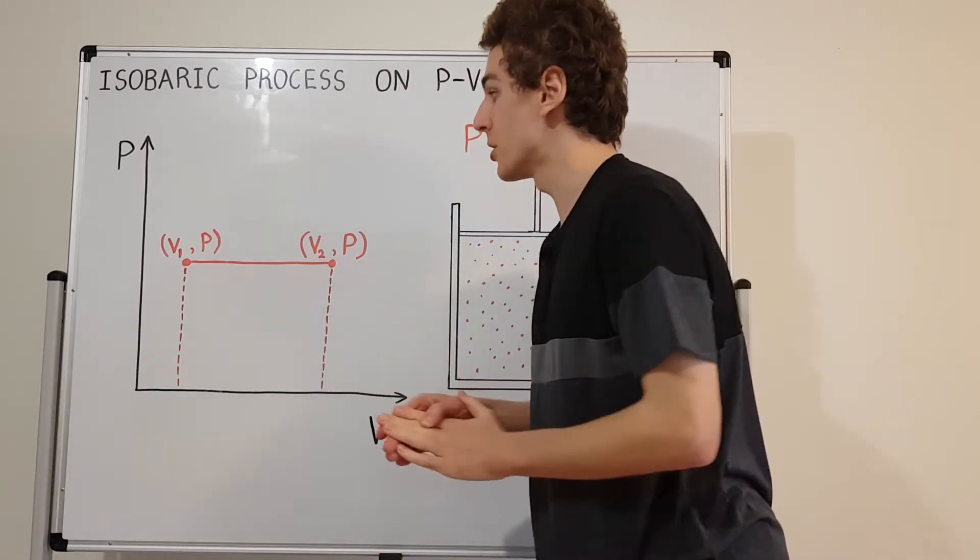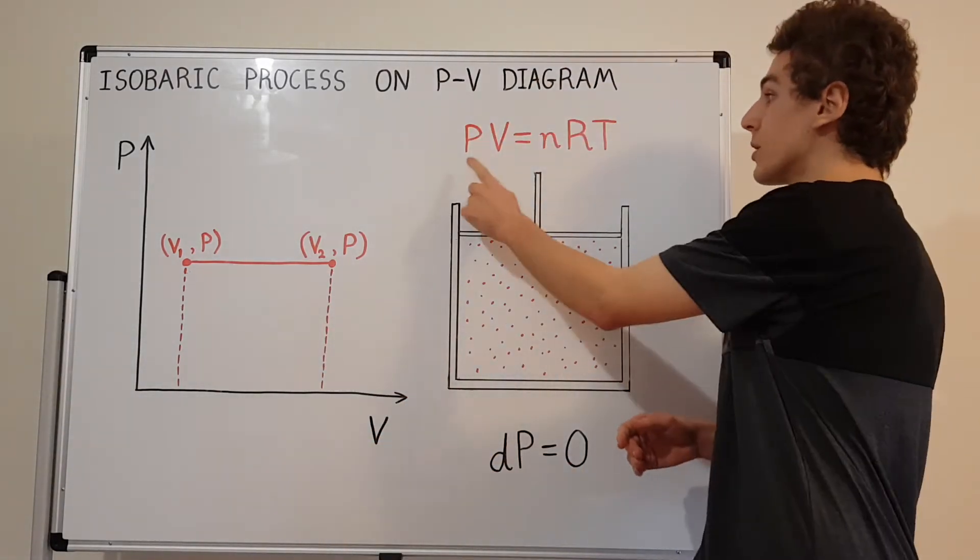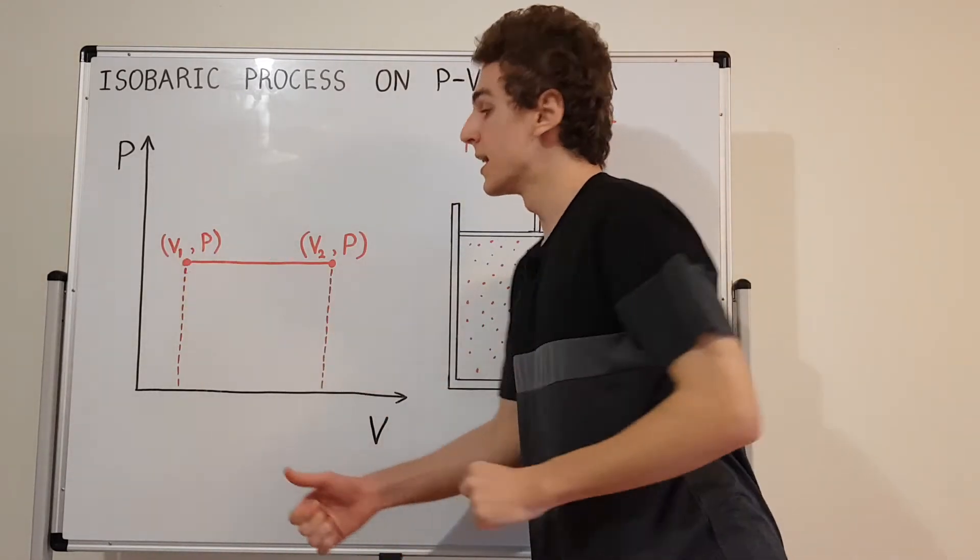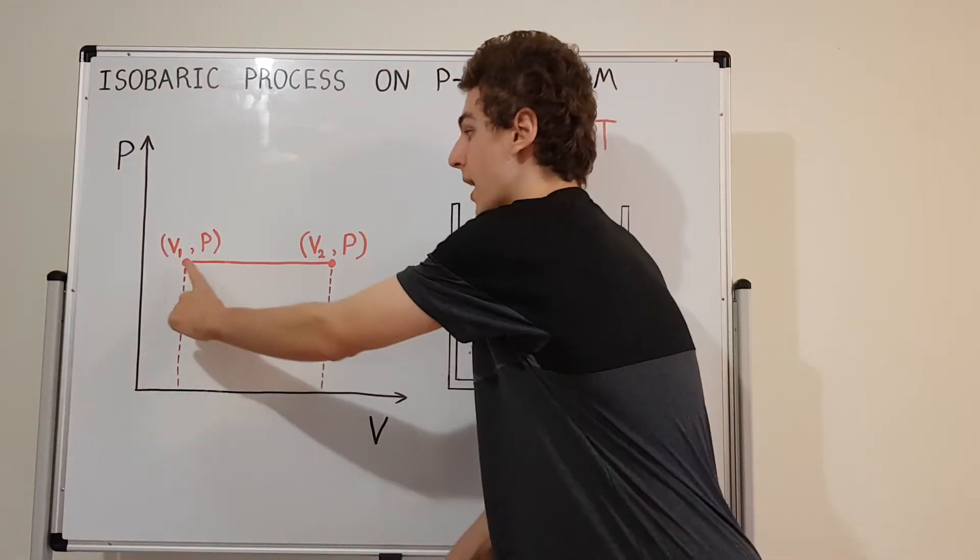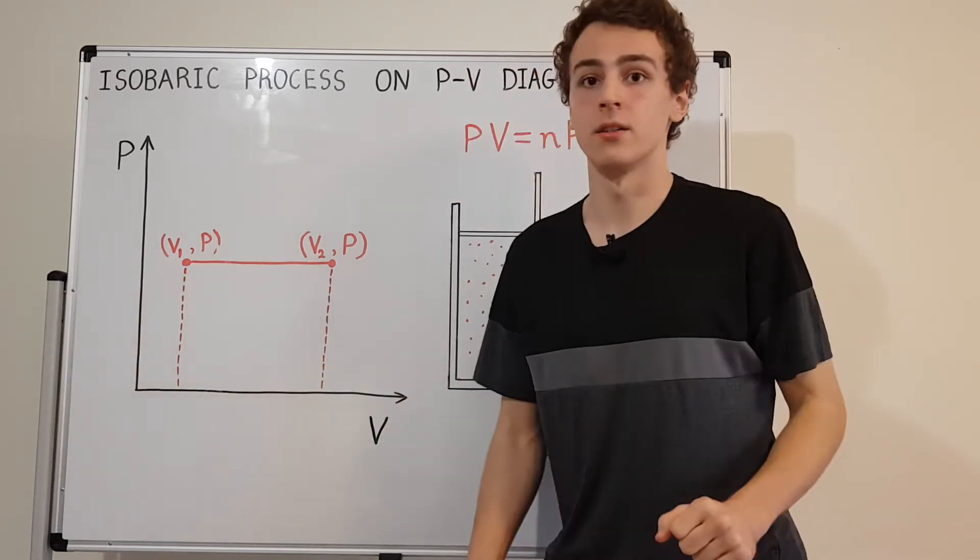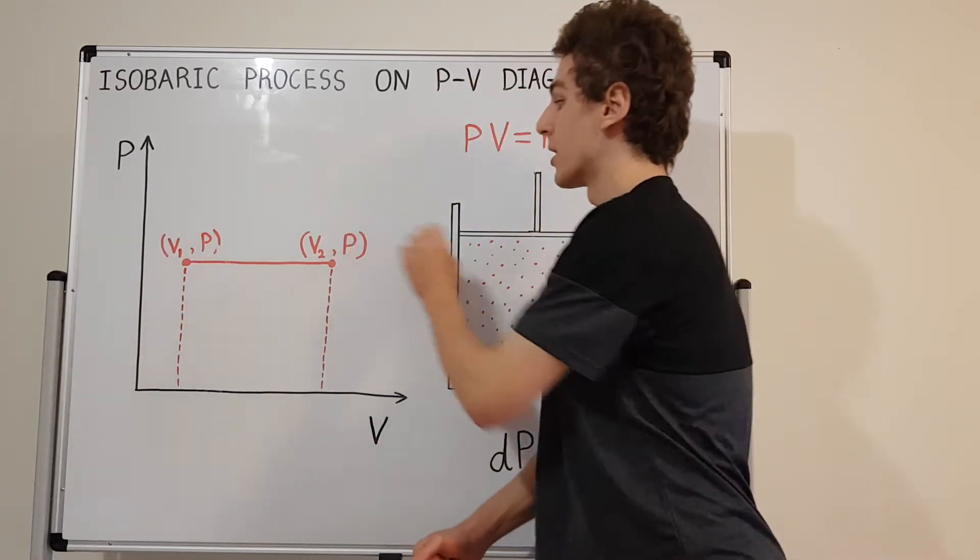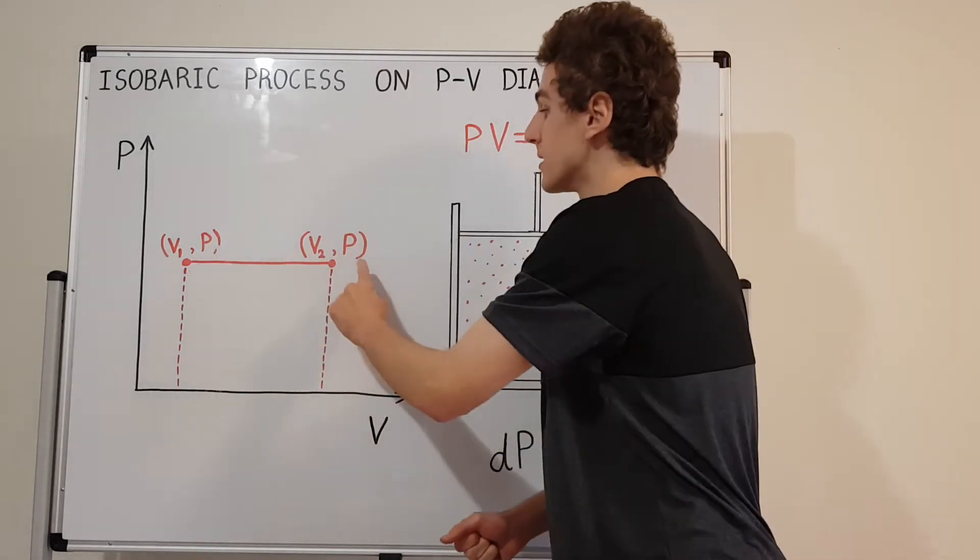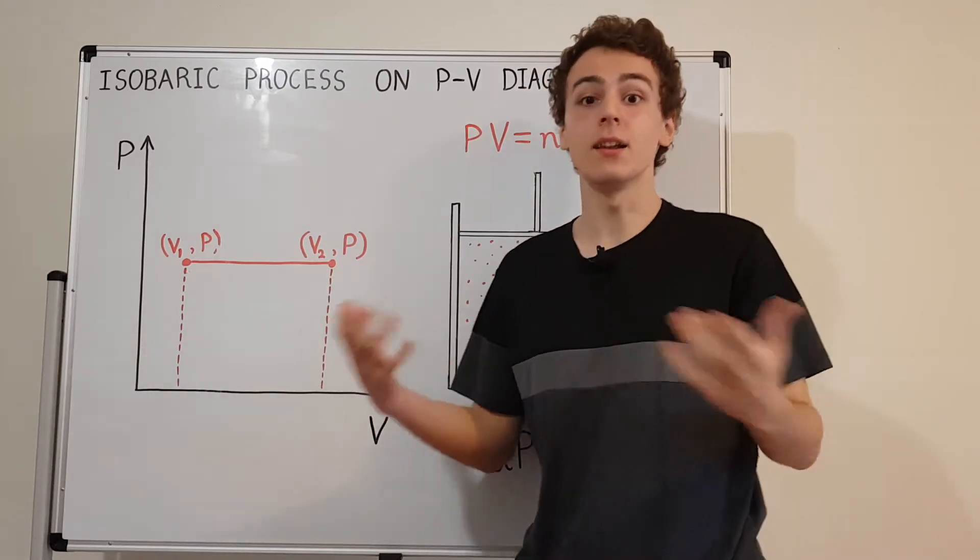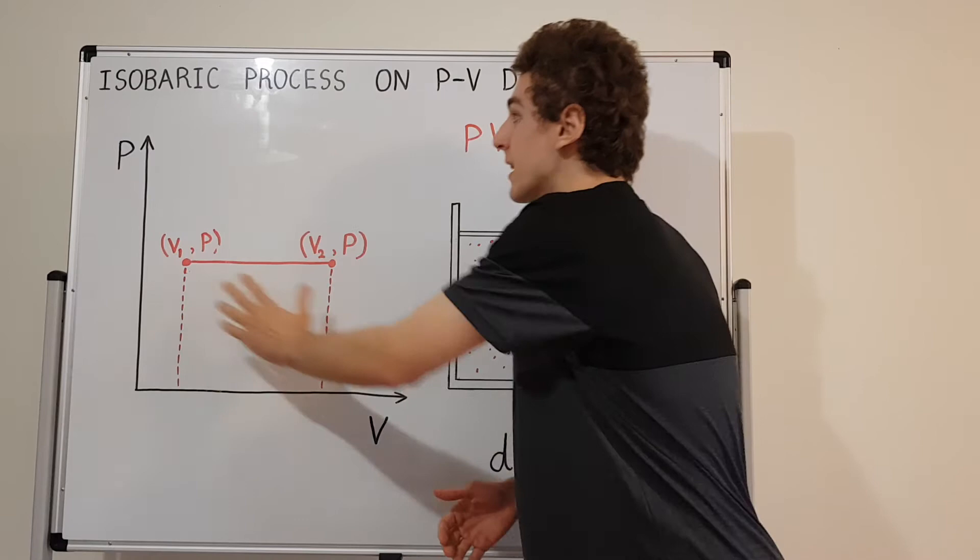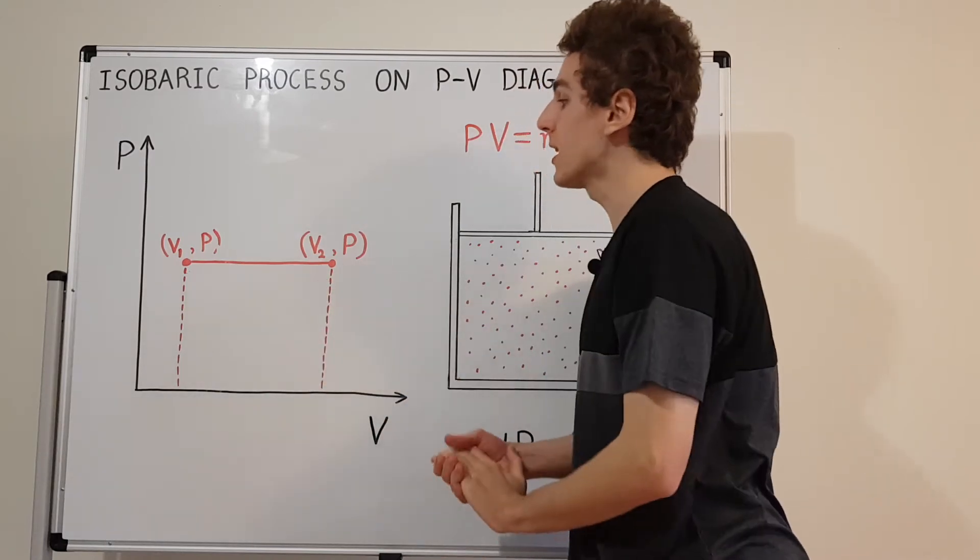Temperature is proportional to the product of pressure and volume. The bigger the product, the bigger the temperature. Higher temperatures are over here, lower temperatures over here. Why? Because this product is larger. If P is constant and V is increasing, the product is larger. That is an isobar on the PV diagram.